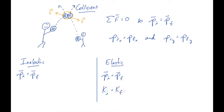Each basketball was carrying kinetic energy the instant before they collided. After, if we added all the kinetic energies up, it would probably be about the same. That's a decent example of an elastic collision.